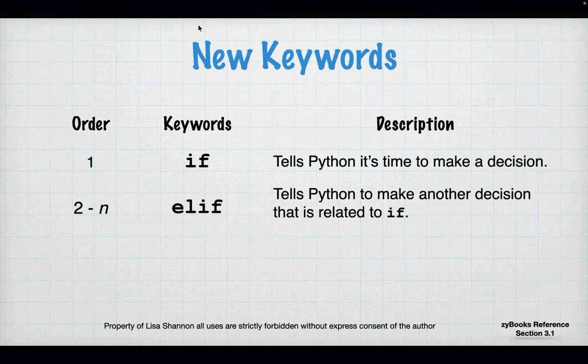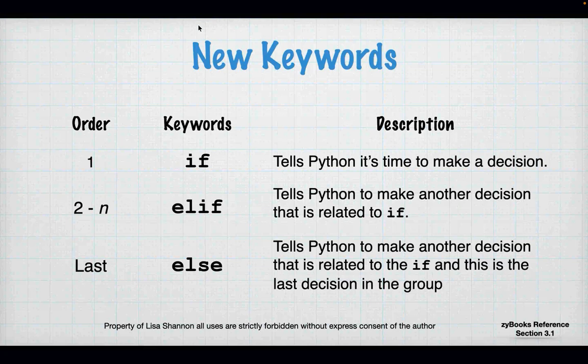Elif comes after if and says we're going to make another related decision. The last one is else, which basically says: all else fails, do what I tell you here. Of these three, you only have to have one to make a decision, and that's if. The others are add-ons. Elif allows you to make a determination if the previous decision was false. Else just says if all else fails, do this.